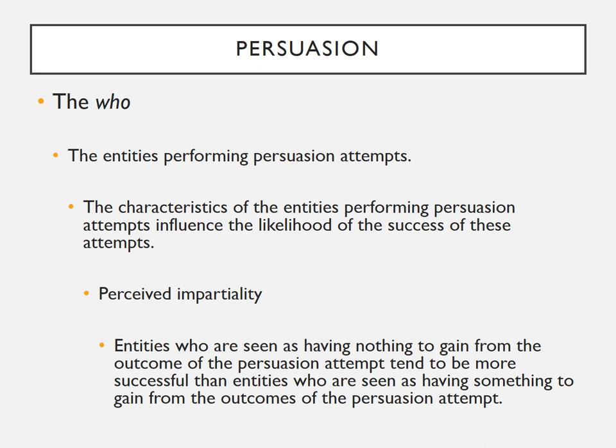It is key to note that it is perceived impartiality — not actual impartiality — that influences persuasion. People must make guesses about the impartiality of entities, and they can be wrong for two big reasons. First, people aren't mind readers and can never truly know if someone has an ulterior motive. Second, many people implicitly know that impartiality influences persuasion and thus try to hide their partiality. For instance, your friend might actually want you in the class for her own reasons, while I may genuinely have no ulterior motive since I'll teach the course regardless.